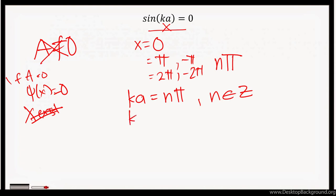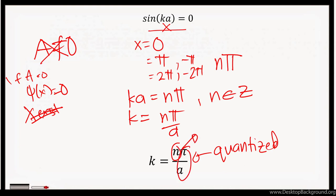This would mean that k will be equal to nπ/a. And we'll see that our k values become quantized, since k must be an integer multiple of π/a.